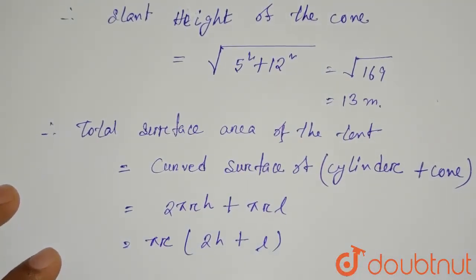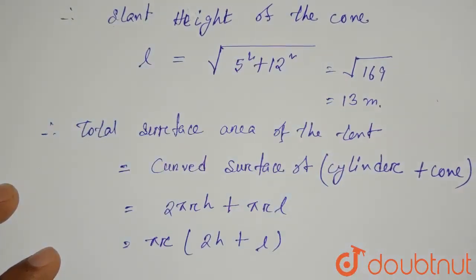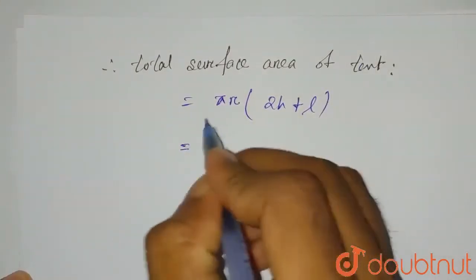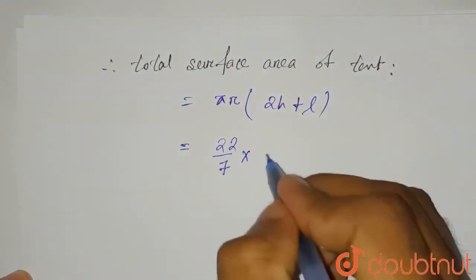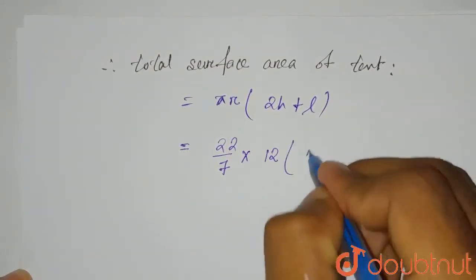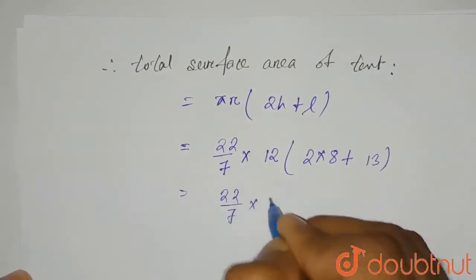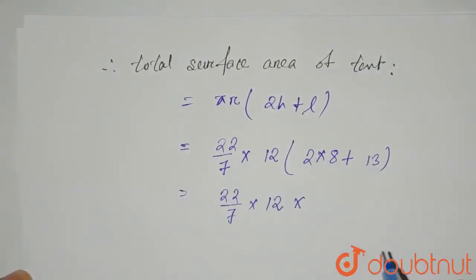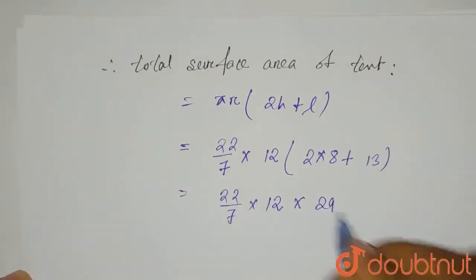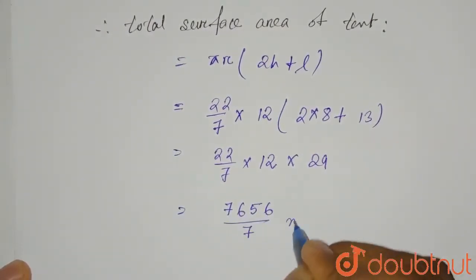The height h of the cylinder is 8 meters, l is the slant height of the cone which is 13 meters, and r is the radius which is 12 meters. Substituting: (22/7) × 12 × (2×8 + 13) = (22/7) × 12 × (16 + 13) = (22/7) × 12 × 29, which gives 7656 divided by 7 meters squared.